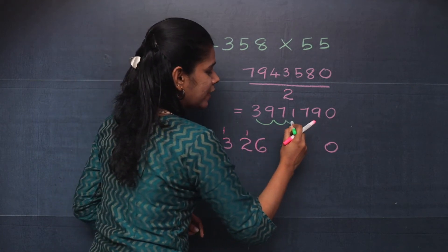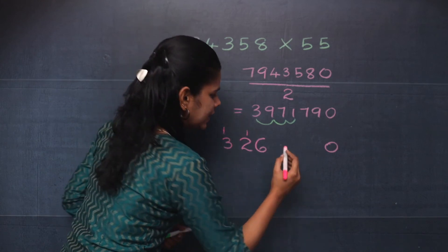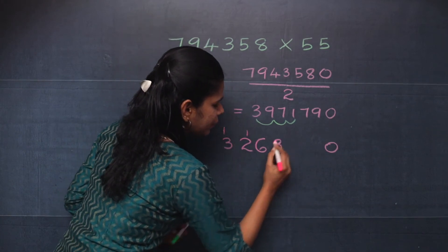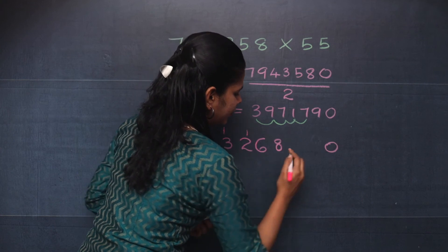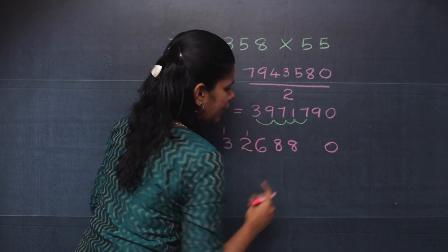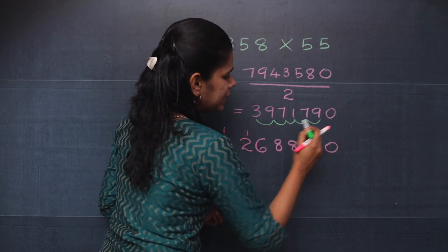Now what is 7 plus 1? It is 8. So you will write it here. Now again, what is 1 plus 7? It is 8.